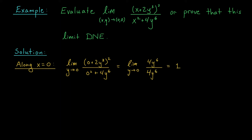Now, this isn't a proof that the limit exists, but it does give us some valuable information. It tells us that if our limit exists, it must have a value of 1. Either along every path to the origin our function approaches 1, in which case that's our limit, or along some other path we approach a different value, in which case our limit doesn't exist. Rather than proving this limit is 1 straight away, I'm going to check a few more paths. Writing down a proof using the squeeze theorem is usually a lot more work, so I'm going to avoid it if I can.